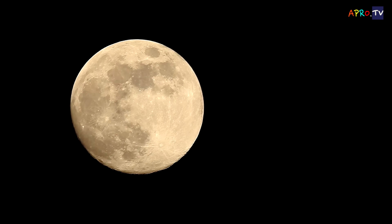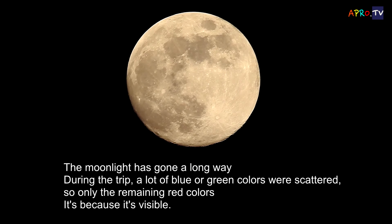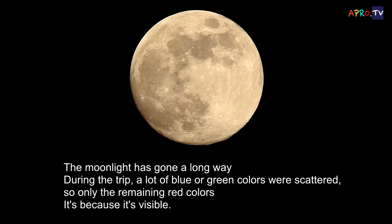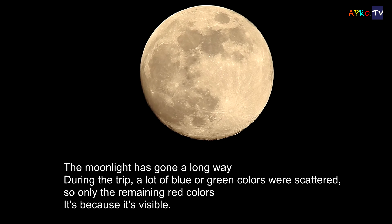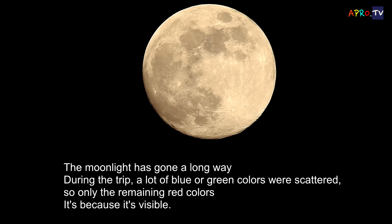Also, even when the elevation of the moon is low, it looks red. At low altitude, the atmosphere between the observer and the moon is thick. The moonlight has traveled a long distance, and during that journey, a lot of the blue and green colors are scattered, so only the remaining red colors are visible.